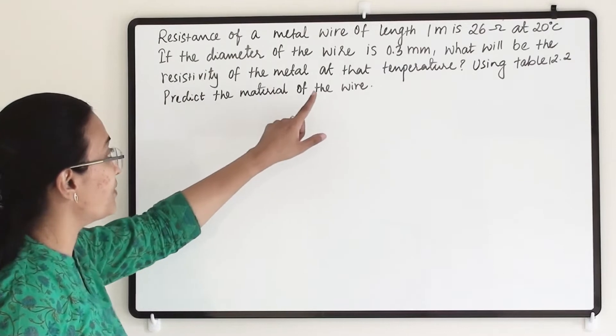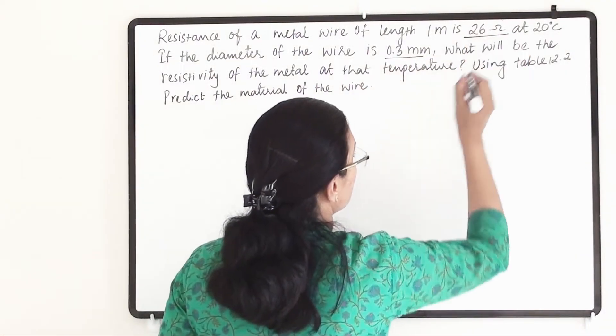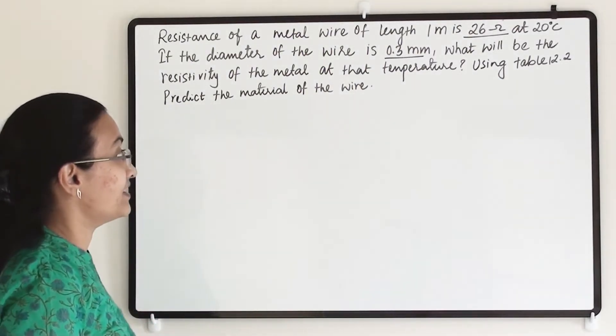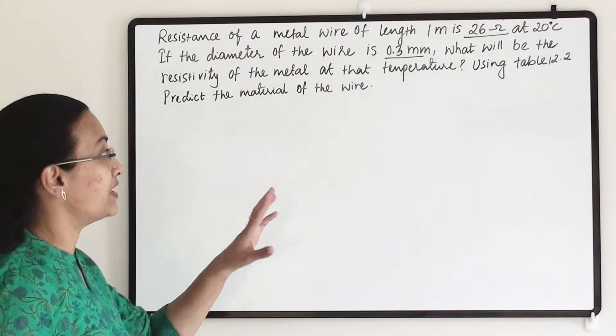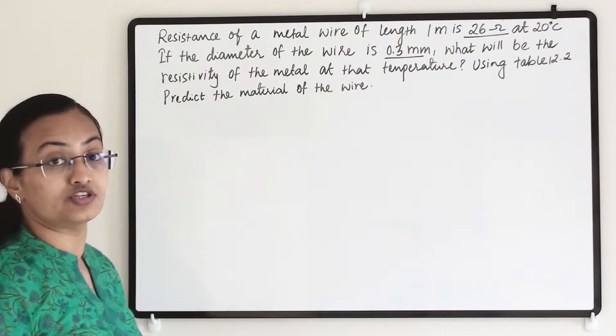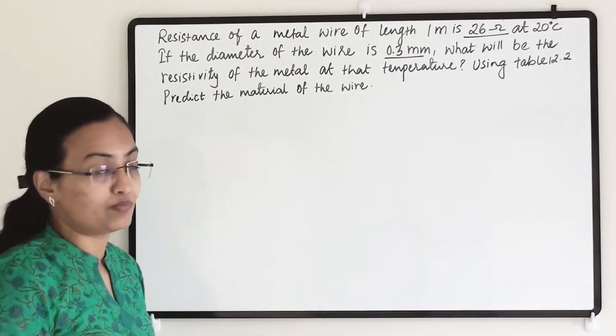If the diameter of the wire is 0.3 mm, what will be the resistivity of the metal at that temperature? Using table 12.2 to predict the material of the wire. Let us first find out the resistivity of the metal and then we will match that with table 12.2.